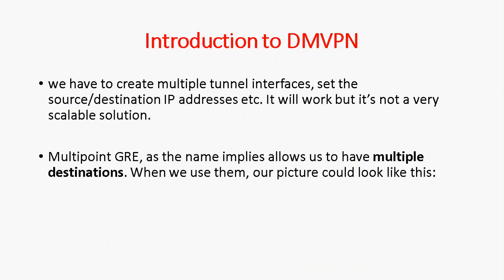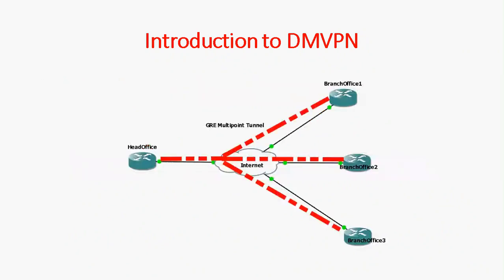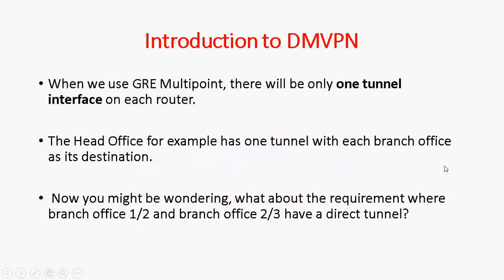With regular GRE we have to create multiple tunnel interfaces and configure source and destination IP addresses. It will work but it's not a very scalable solution. That's why we go for multi-point GRE. As the name suggests, it supports multiple destinations. With multi-point GRE, there is only one tunnel interface for each router — for example, the head office has only one tunnel interface connecting to branch offices 1, 2, and 3.